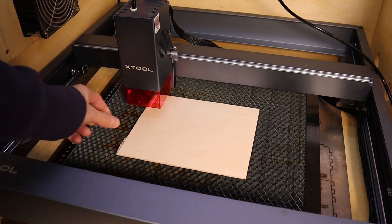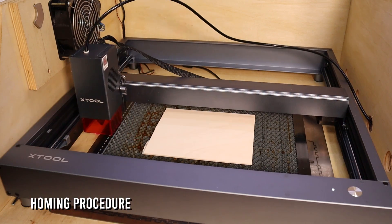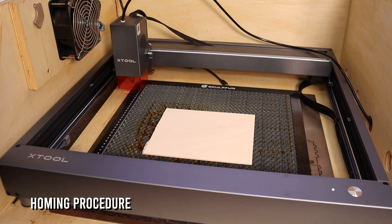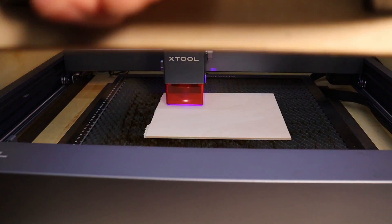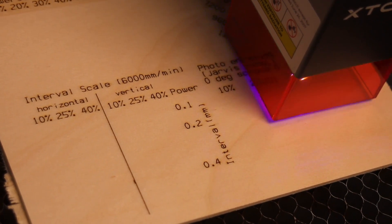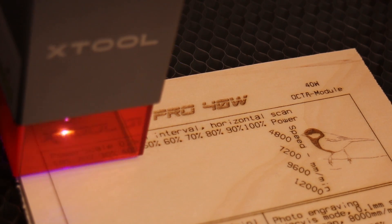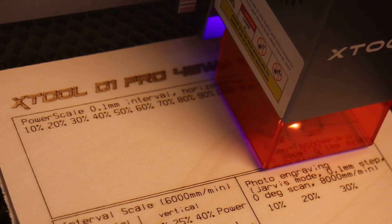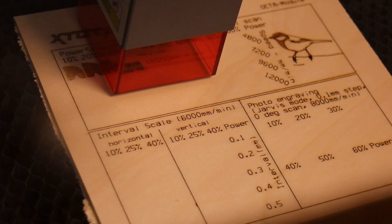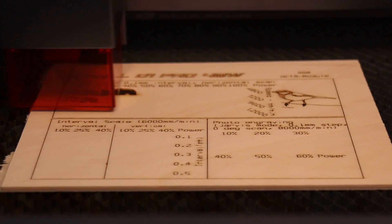First, I did the standard plywood engraving test I do on all laser engravers. Since this machine is by far the most powerful, I couldn't use the same test parameters as for the 20W machines because the powerful octadiode module burned through everything. I had to modify the pattern to avoid burning through the material.